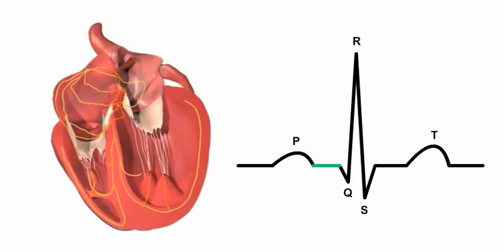The period of conduction that follows atrial systole and precedes the contraction of the ventricles is depicted on the ECG by the PR segment, a flat line following the P wave.